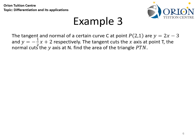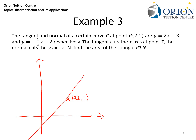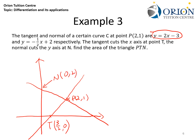In Example 3, for a certain point P on a curve with coordinates (2, 1), the tangent is y equals 2x minus 3, and the normal is y equals negative one half x plus 2. The tangent cuts the x-axis at point T: substituting y equals 0 gives coordinates (3/2, 0). The normal cuts the y-axis at point N with coordinates (0, 2). We are asked to find the area of triangle PTN.